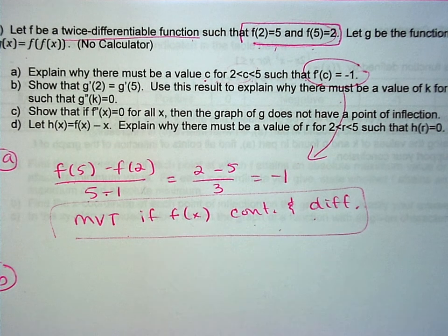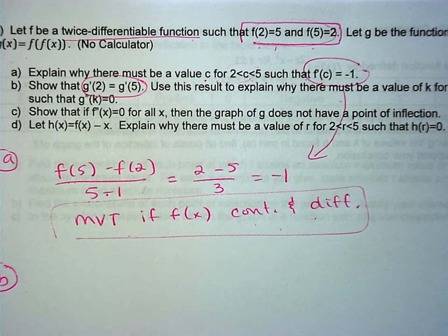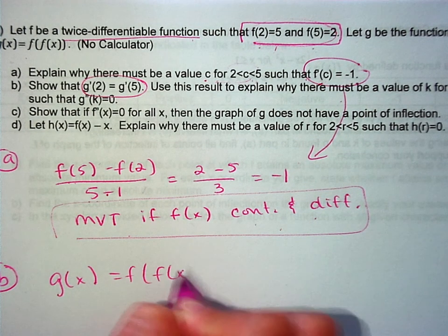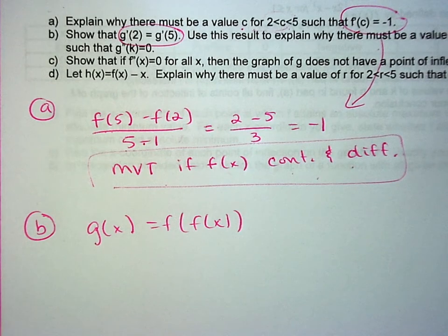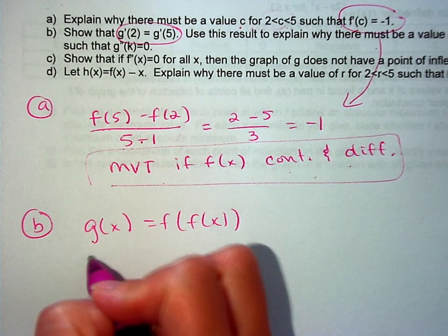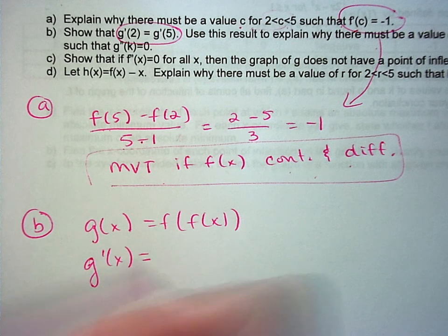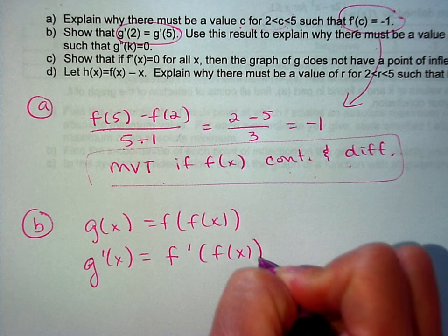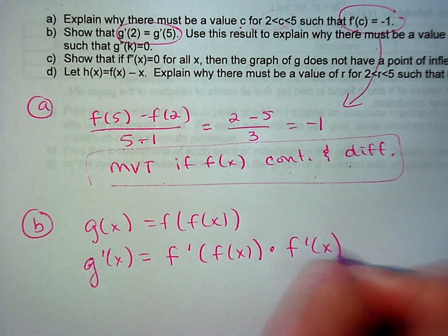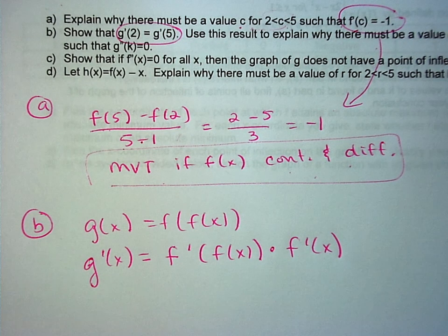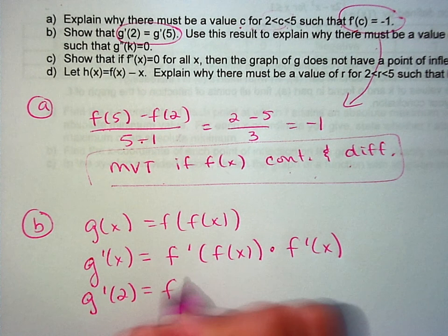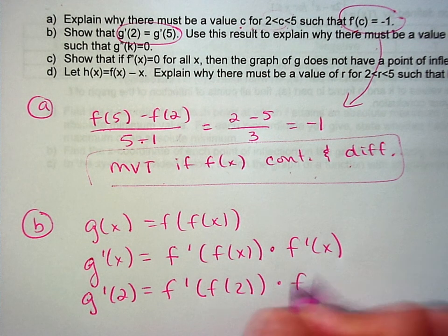Part b: show that g′(2) equals g′(5). Since g(x) = f(f(x)), we need to differentiate using the chain rule. The derivative g′(x) is the derivative of the outside — f′(f(x)) — with the inside staying the same, times the derivative of the inside, f′(x). Now let's find g′(2) by plugging in 2 everywhere there is an x.